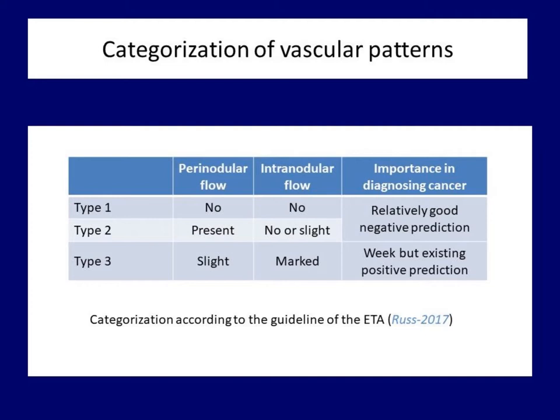I present the classification of the European Thyroid Association. In type 1 vascularity, there is neither perinodular nor intranodular flow. If peripheral flow predominates, we speak of type 2. If intranodular prevails, we speak of type 3 pattern. The former two subgroups have a relatively good negative predictive value for thyroid cancer, but this mainly shares statistical and not practical importance.